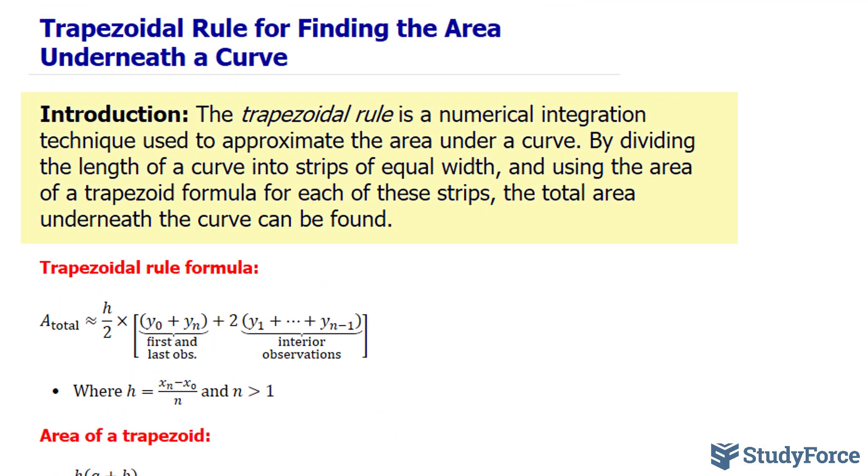The trapezoidal rule is a numerical integration technique used to approximate the area under a curve. By dividing the length of a curve into strips of equal width and using the area of a trapezoid formula for each of these strips, the total area underneath the curve can be found.